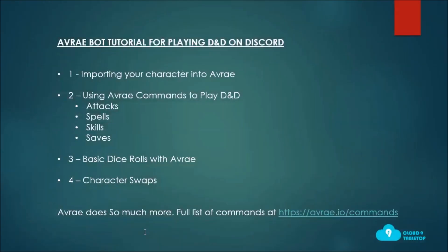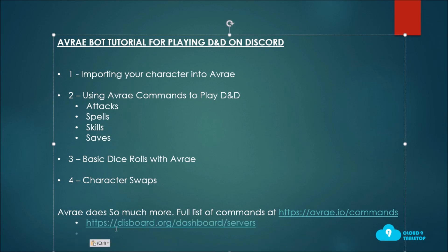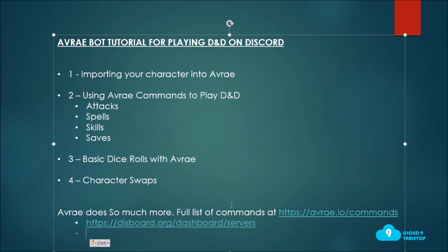I promised at the end of this video I'd show you two places to find servers running Avrae today so you can get started. The first is a site called Disboard — it's at disboard.org. You can go to disboard.org slash servers and get a list of Discord servers running different things. Avrae is one of the tags you can search for, and you'll find servers running Avrae.